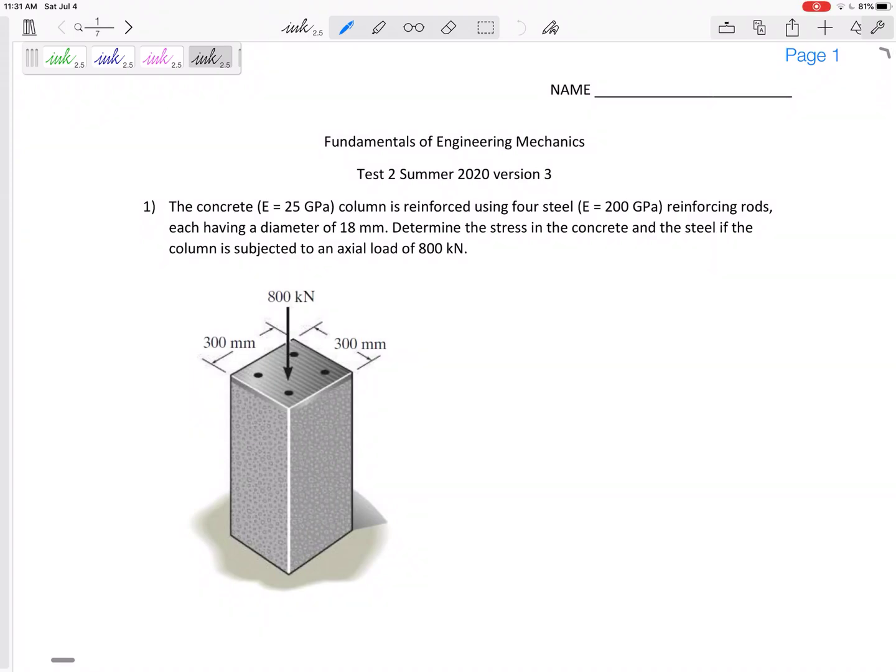Alright, so let's get ready for Test 2 for this Fundamentals of Engineering Mechanics class. We're going to have six problems. They might not be worth the same amount. I'll try to tell you beforehand because some of these might be shorter than others. But you know the topics. I'm going to go through one example of every type of problem, but just because it's not here on this review doesn't mean that it might not show up on the test.